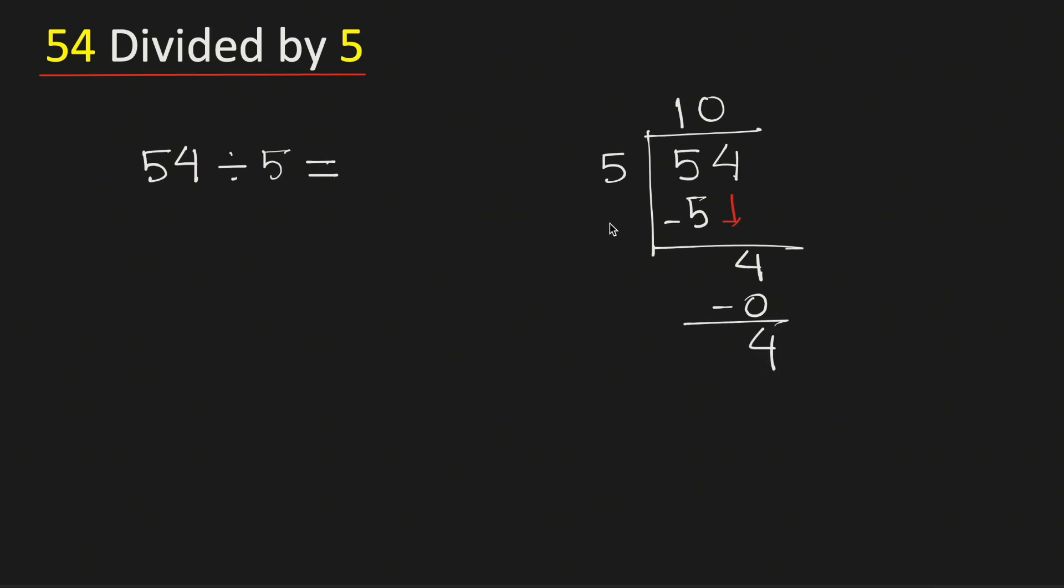Now see that 4 is less than 5, but in this case as we don't have any number to bring down here, so we will put a decimal here so that we can write one 0.